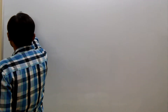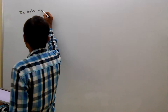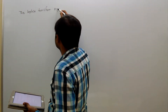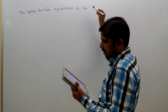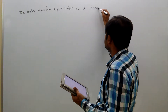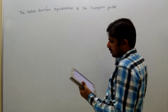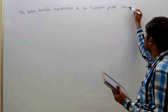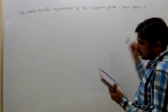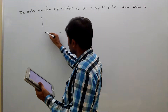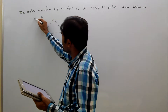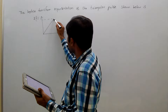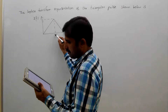The Laplace transform representation of the triangular pulse shown below is: x of t, where this value is 1, this is 1, and this is 2.